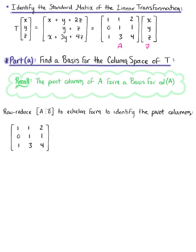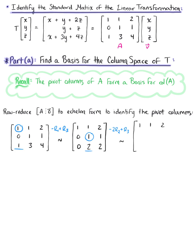Looking at our matrix A and our first pivot position, we want to use that pivot to eliminate the entry below it by doing minus the first row plus the third row, which leaves us with the row equivalent matrix: [1, 1, 2; 0, 1, 1; 0, 2, 2]. Moving to our second pivot position, we eliminate the entry below it by doing negative 2 times the second row plus the third row, which gives us: [1, 1, 2; 0, 1, 1; 0, 0, 0]. We have successfully attained echelon form.